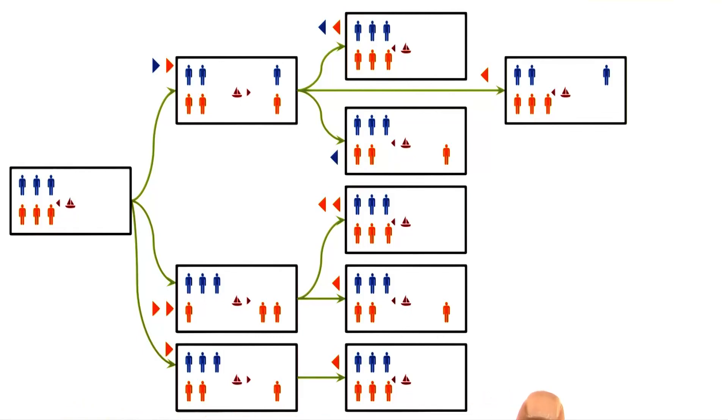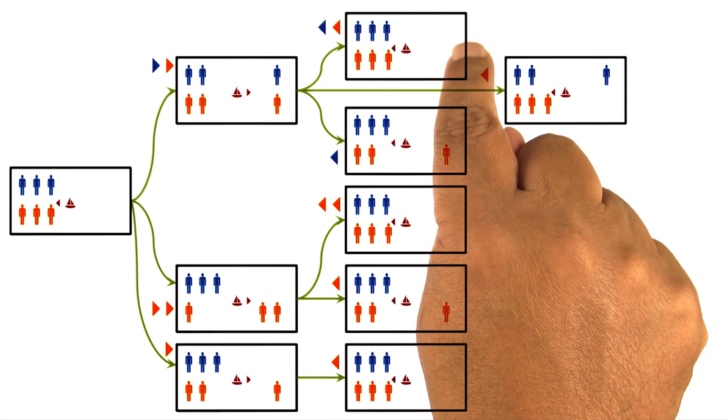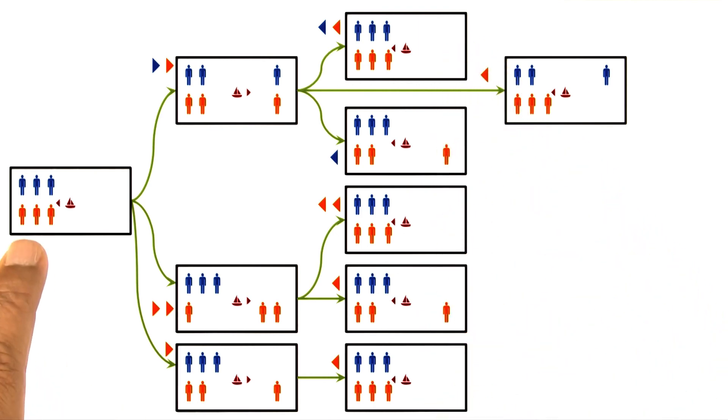Instead of the generator generating all the successor states and then the tester finding out that this state, this state, and this state are identical to the initial state.